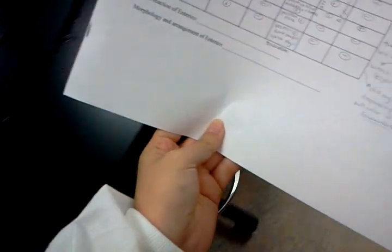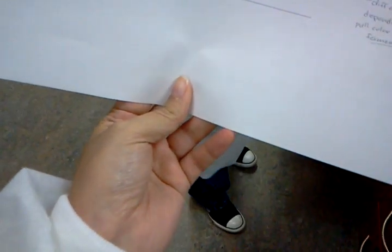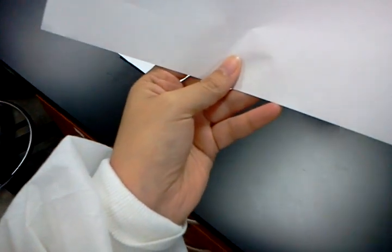Results should be the same for both McConkey's and eosin methylene blue because they'd both be lactose fermenters and take up the dye in the agar plate, but McConkey's would also have bile salts.